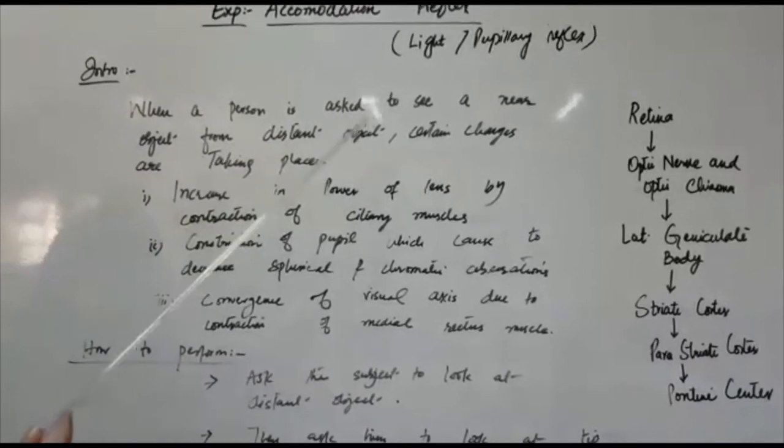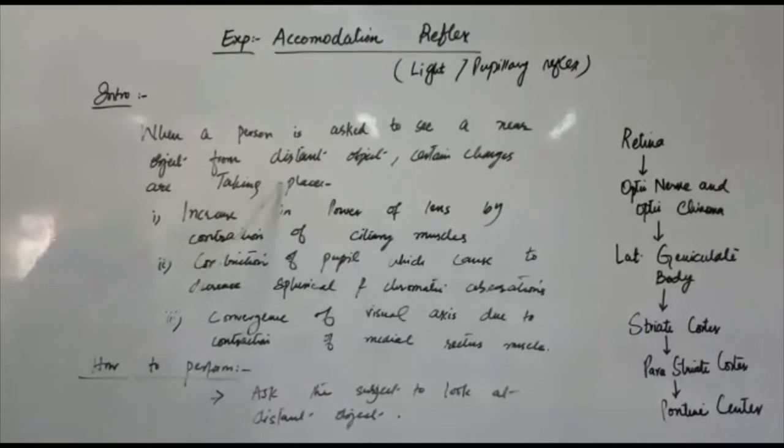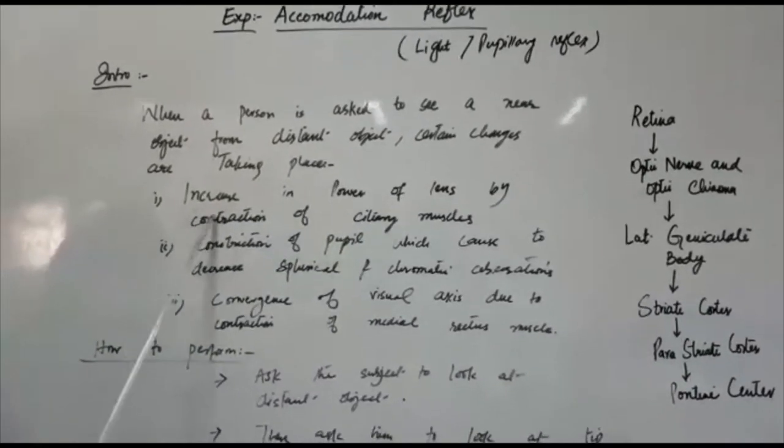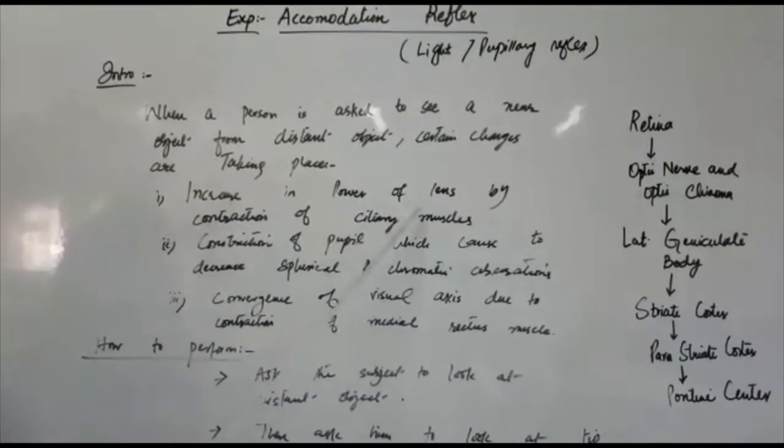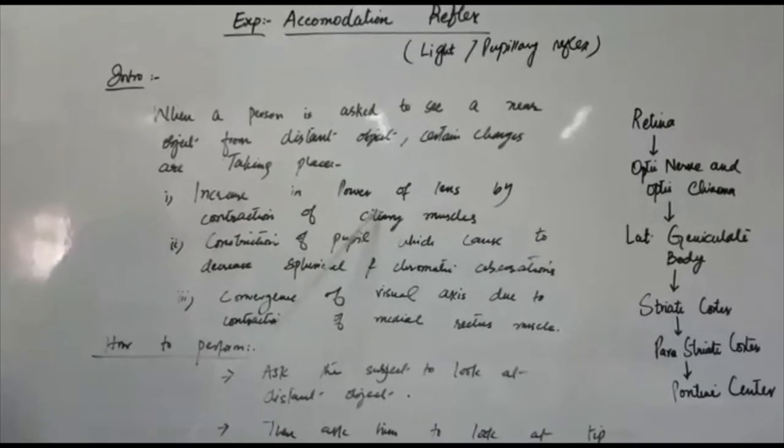Whenever a person is asked to see a near object from the distant object, certain changes take place. First of all there is increase in the curvature of lens by contraction of the ciliary muscles.